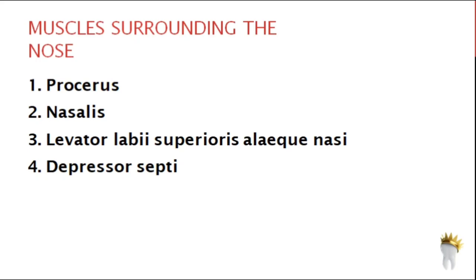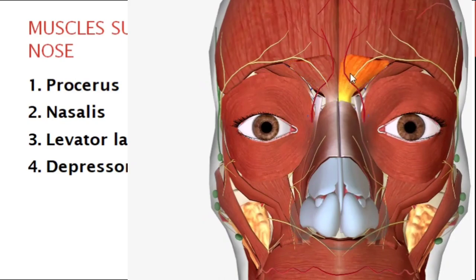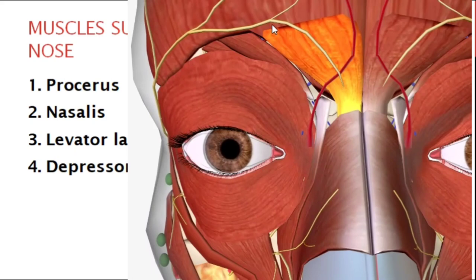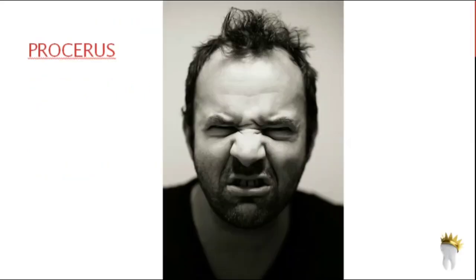The procerus is a small triangular muscle occupying the glabella. It originates from the nasal bone and inserts into the skin of the glabella and fibers of the frontalis muscle. It depresses the medial end of the eyebrow and wrinkles the skin between the eyebrows, causing frowning. Injecting it with Botox is a common anti-aging technique.